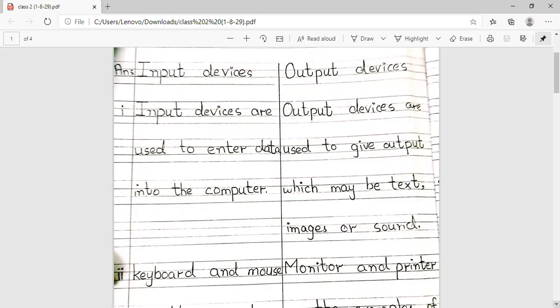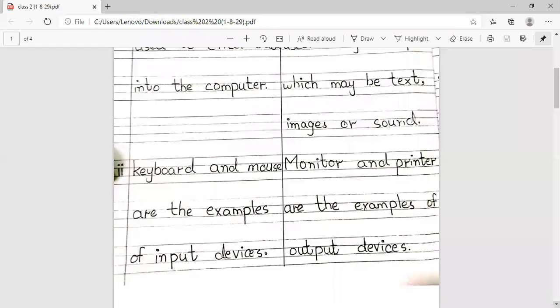First, input devices. The keyboard and mouse are examples of input devices because we are using the keyboard and mouse when we are using the computer, when we are typing.